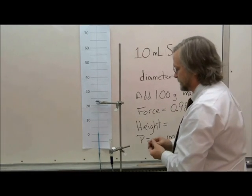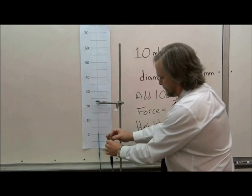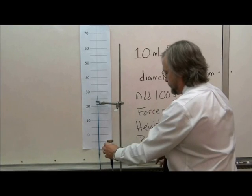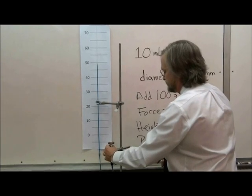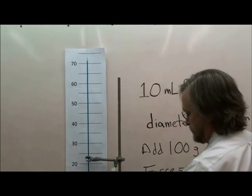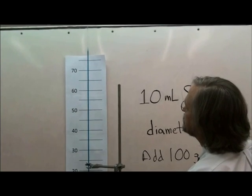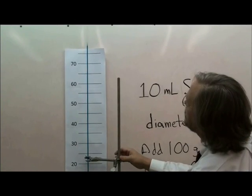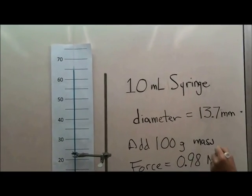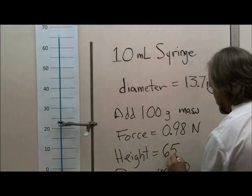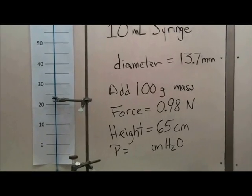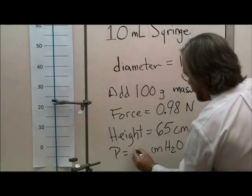Now let's repeat the experiment using a larger mass. If I place a 100 gram mass on the syringe, I will be placing twice the amount of force on the syringe plunger, which will create twice the pressure in the syringe, and we should see the height of water go up twice as far in the barometer. After jiggling the syringe once again to overcome frictional forces, we see that the water in the barometer rises to a height of 65 centimeters.